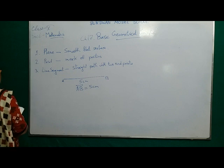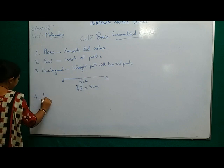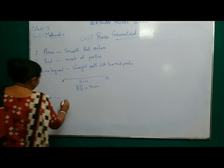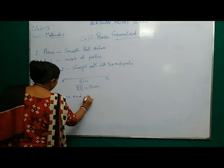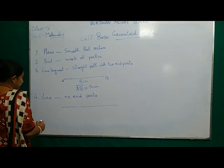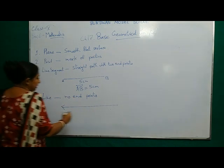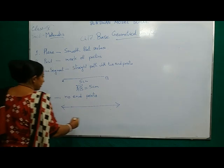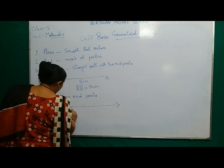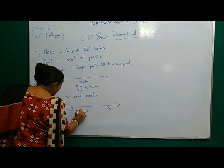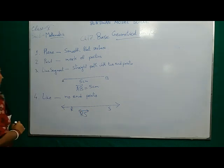Next comes line. A line has no endpoints. If I am taking any line, it is going this side and this side also. Suppose I am taking any two points on this line — R and S. How will I denote this? I will denote RS with arrows on both sides. This is the line, and a line has no endpoints.